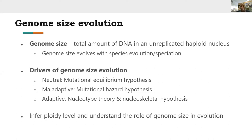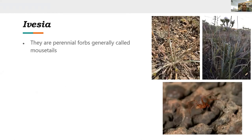Understanding genome size evolution can help us infer ploidy level and understand evolutionary events in a particular genus. In this study, I used Ivesia to understand genome size, estimating it across several taxa of Ivesia across the Great Basin Desert, the Mojave Desert, and other parts of the western United States.